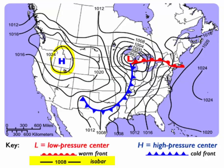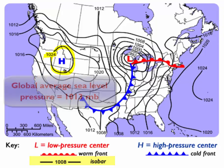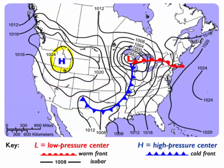That air pressure is 1024 millibars. The global average is usually about 1013, and so here we've got a value a little higher than that — it's 1024 — so this is what we call a high air pressure area.